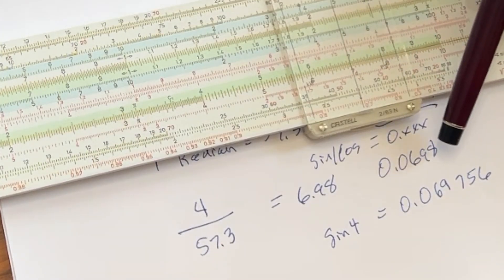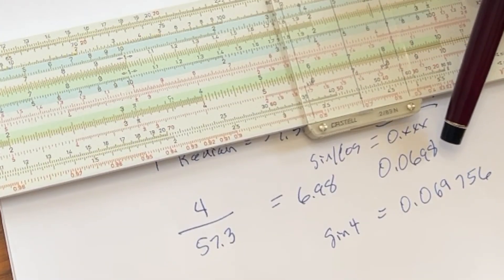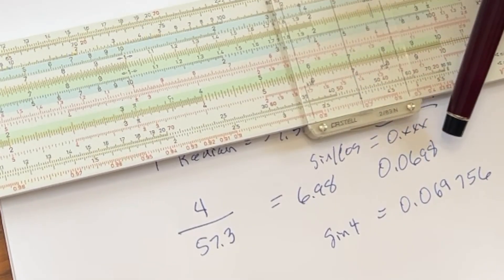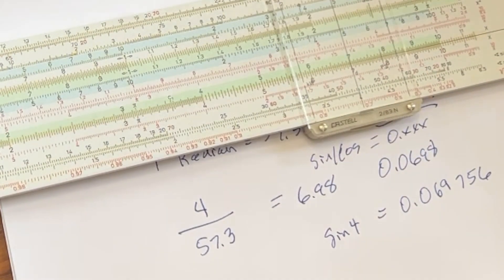And again, we're at 0.0698. So you can't really tell the difference here, but if you divide it out, you'll see you get a little more accurate result.